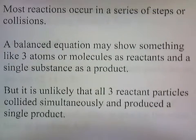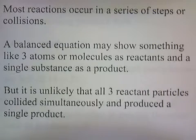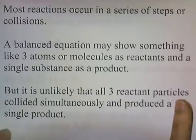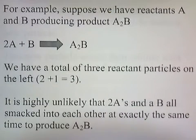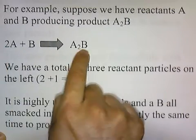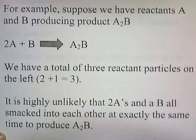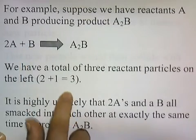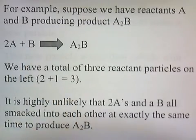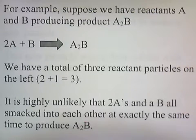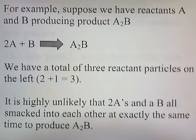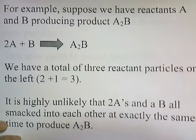Most reactions occur in a series of steps or collisions. A balanced equation may show something like three atoms or molecules as reactants that produce a single substance as a product. But it's unlikely that all three reactant particles collided simultaneously to produce a single product. For example, 2A plus B gives A2B — a total of three reactant particles. It's highly unlikely that two A's and a B all smacked into each other at exactly the same time to produce A2B. That would be the equivalent of three automobiles all crashing into each other head-on at the exact same time — not very likely.